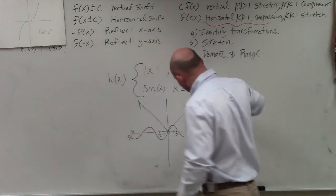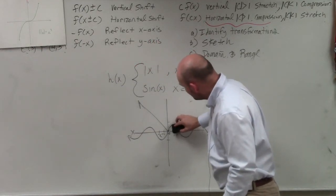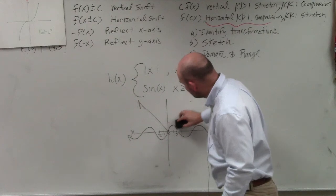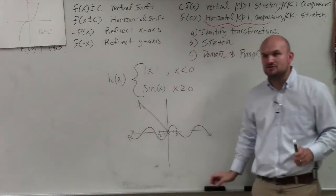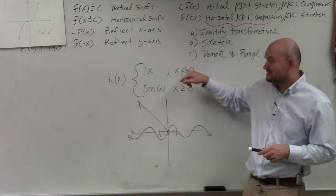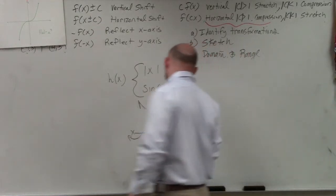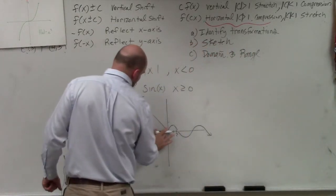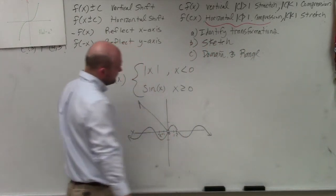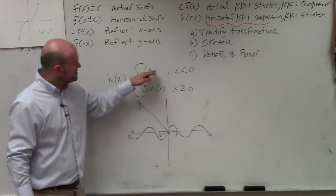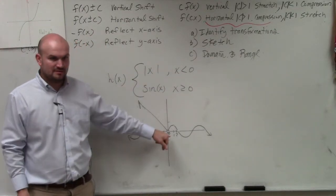All I need to do to satisfy my piecewise function is erase the positive portion of my absolute value function. It also says less than — not less than or equal to — so I need to use an open circle. That's what the piecewise function for less than zero looks like.